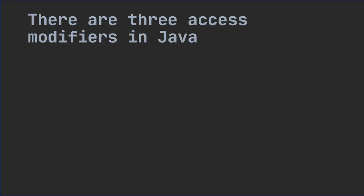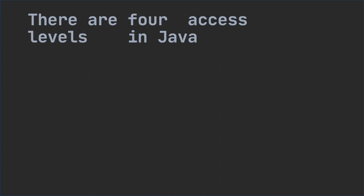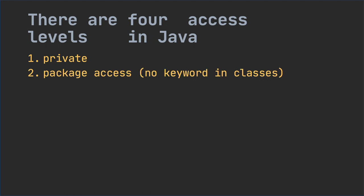There are three access modifiers in Java. These are language keywords that modify the access level of class members. These keywords are private, protected, and public. With these, and with the obvious default case when we do not use any modifier, there are four access levels in Java: private, package access (when we do not use any access modifier keyword in front of the member declaration), protected, and public.